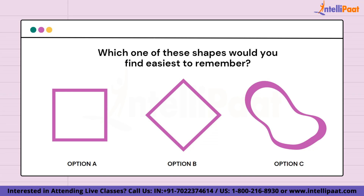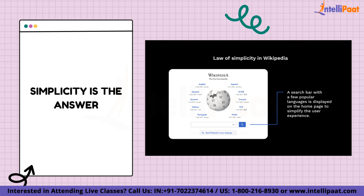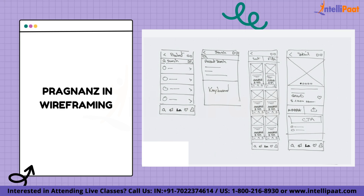Number two: simplicity is the answer. Given that our brains choose not to get overloaded with information, it's essential to reflect this quality in design. Creating products with simplicity in mind will provide users with an intuitive and fundamentally satisfying experience. For example, notice how Wikipedia allows you to switch between languages within the encyclopedia search bar. This is a very small but extremely useful touch of simplicity that makes searching and browsing much more efficient and pleasing.